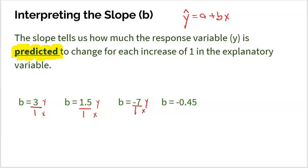For b = negative 7: every time x goes up one unit, y is predicted to go down seven units — that's what the negative means. For b = negative 0.45: as the x variable goes up one, I predict the y variable to decrease by 0.45. You could say it a couple of different ways and switch the ordering, but make sure when you talk about y, it's a prediction. Use the word 'predicted,' use the response and explanatory variable names, and always include units.